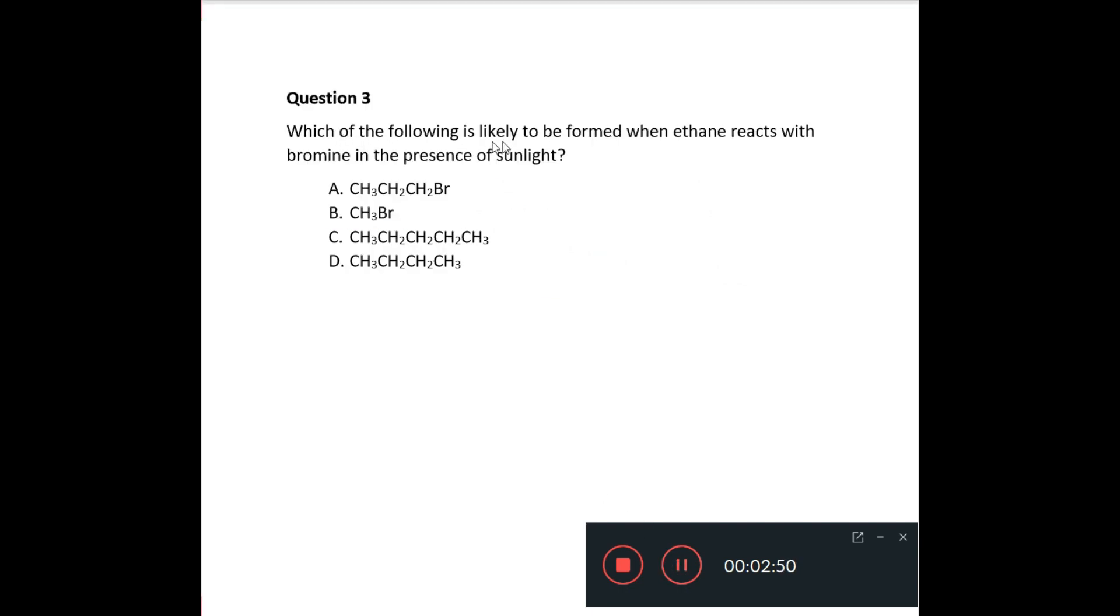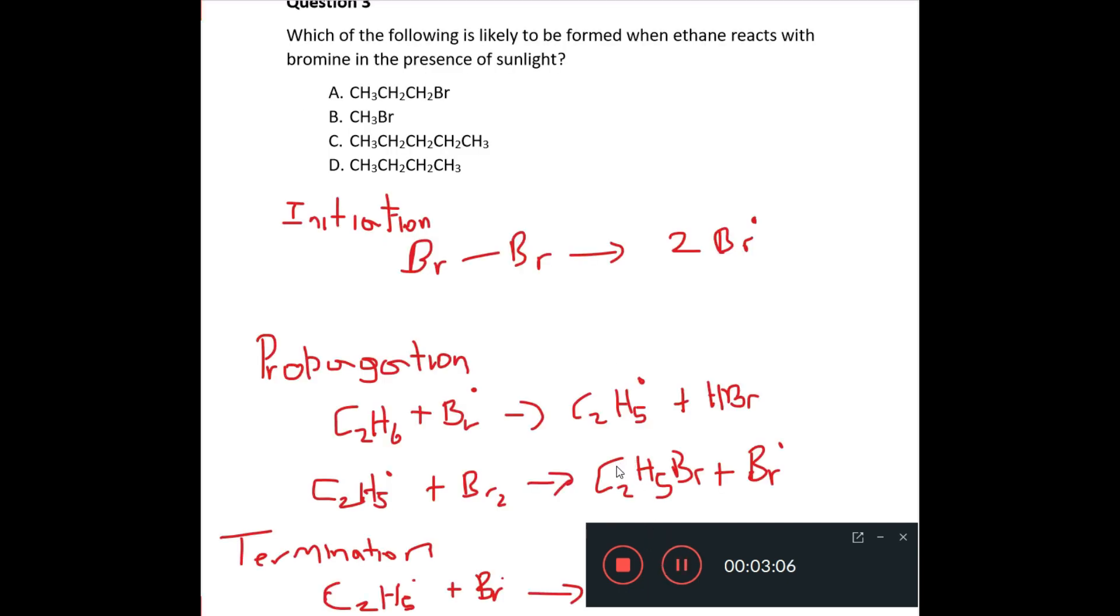Question 3 says which of the following is likely to be formed when ethane reacts with bromine in the presence of sunlight. Now what you want to do for this is to write the mechanism and see which one of these is likely to be formed. So when we look at the mechanism, initiation, propagation, and termination.